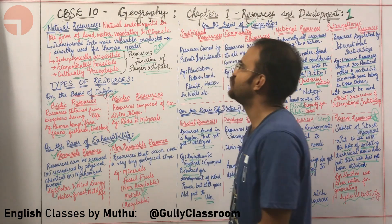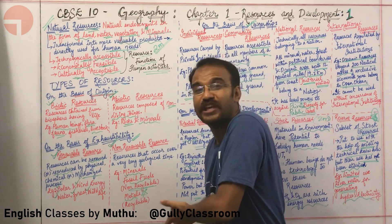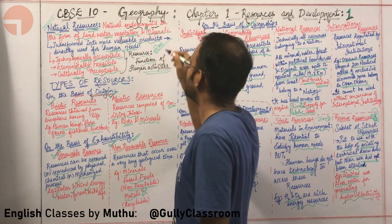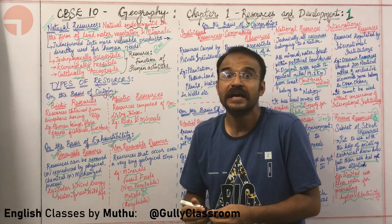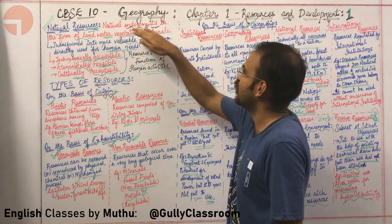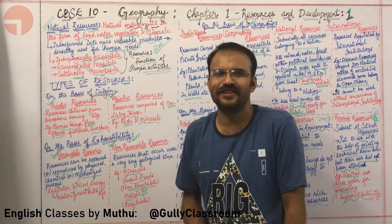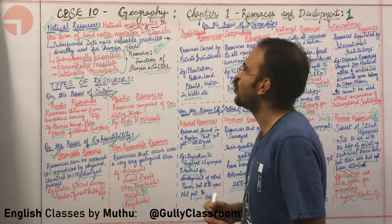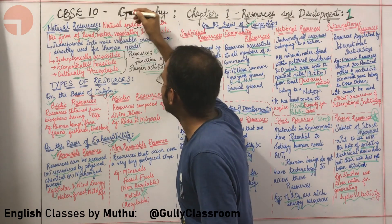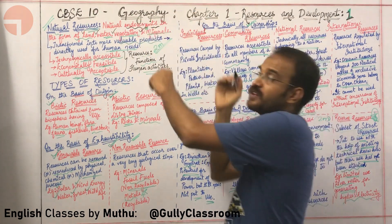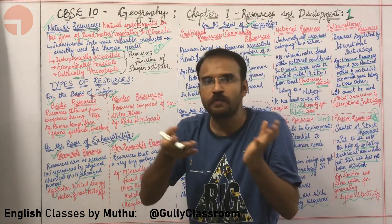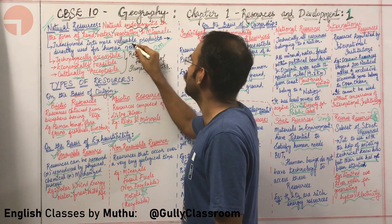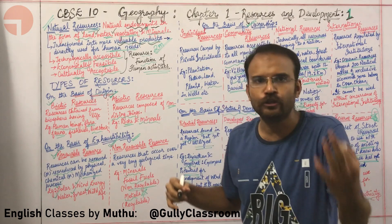Let us start the first lecture: natural resources and their classification. Natural resources are endowments — that is, natural gifts received by humankind. These natural endowments are in the form of land, water, vegetation and minerals that are used by humans and converted into more valuable products that can be directly used by humans.